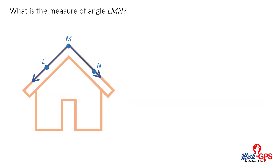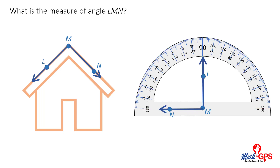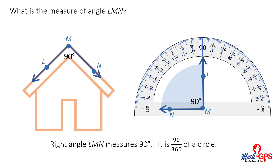What is the measure of angle LMN? Place the vertex of the angle on the location point at the bottom of the protractor. Turn the angle so that one of the rays points to zero degrees. Is the angle acute, obtuse, or right? Right angle LMN measures 90 degrees. It is 90/360ths of a whole circle.